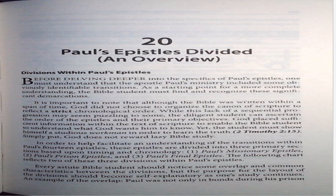Number one: Paul's missionary epistles. Number two: Paul's prison epistles. And number three: Paul's final epistles. The following chart reflects two of these three divisions within Paul's epistles. Every astute Bible student should notice some overlap and common characteristics between the divisions, but the purpose for the layout of the divisions should become self-explanatory as one's study continues.